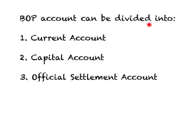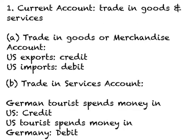The BOP account can be further subdivided into three parts. The first is called the current account, the second is called the capital account, and the third is called the official settlement account. We'll look at each of these sub-accounts in greater detail. The current account records all transactions relating to trade in goods and services, and can be further divided into trade in goods — also called the merchandise account — and the trade in services account.